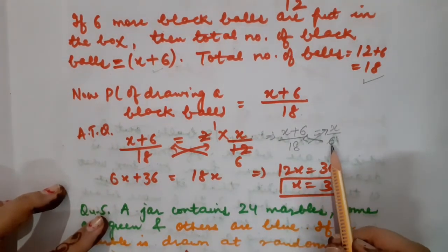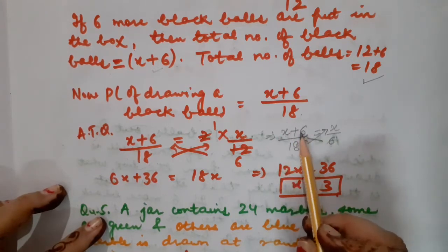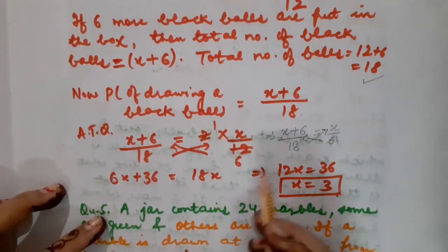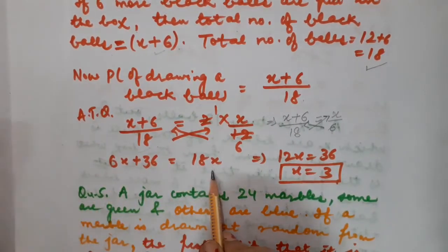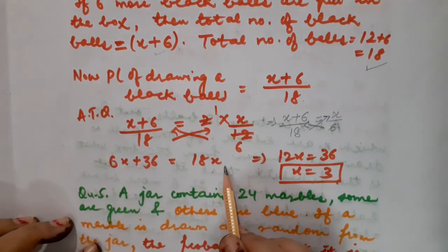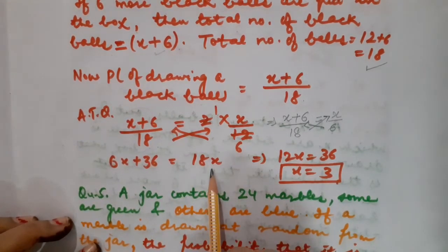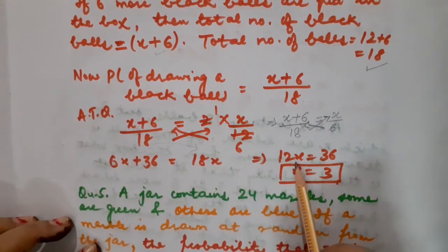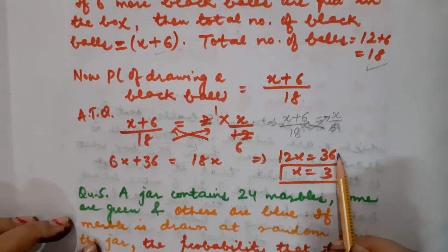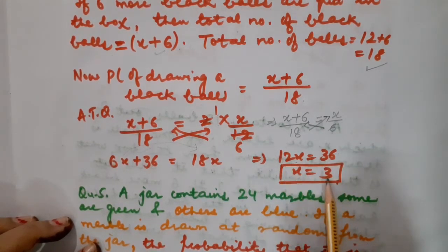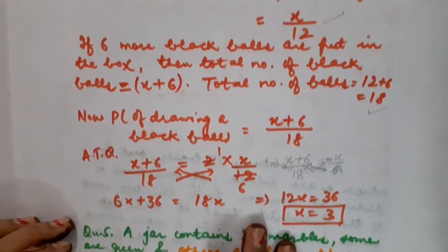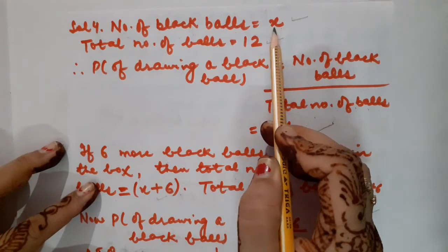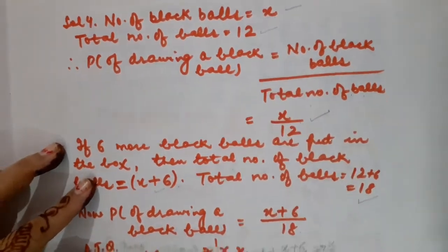Cross multiplying gives 6x plus 36 equals 18x. Bringing 6x to the right hand side: 18x minus 6x equals 12x equals 36. Therefore x equals 36 divided by 12, that is 3. We wanted the value of x, which was the number of black bowls. So the number of black bowls is equal to x equals 3.